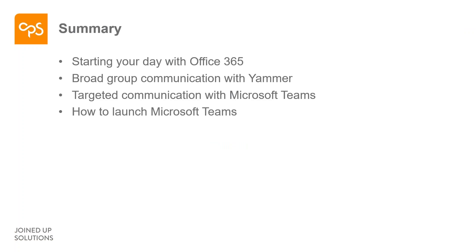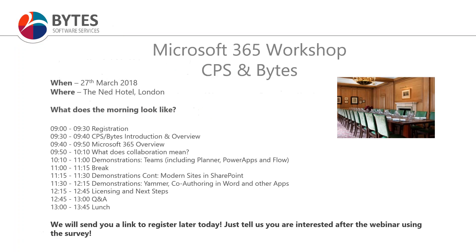A brief summary of what we've looked at today: I started off by showing how we could start a day with Office 365, showing Outlook on the web and how that can help us communicate during the day and protect us from malicious attacks. We had a quick look at Yammer and how it's targeted for communication across the organization for things like communities of practice. We've looked at Teams and how that can help us communicate within smaller groups of collaborators working together. Then we had a brief look at how best to launch Teams within the organization. I'll now hand over to Cassie.